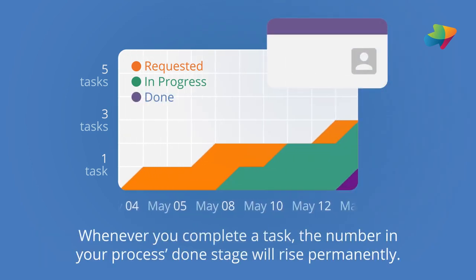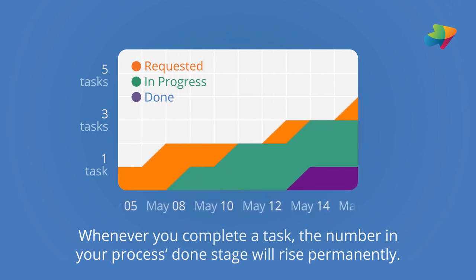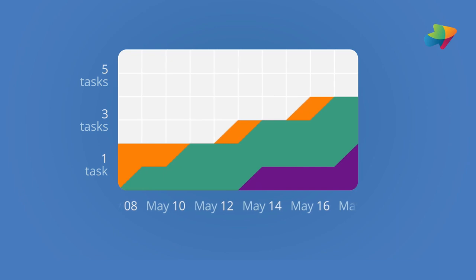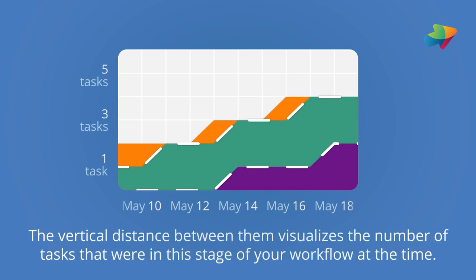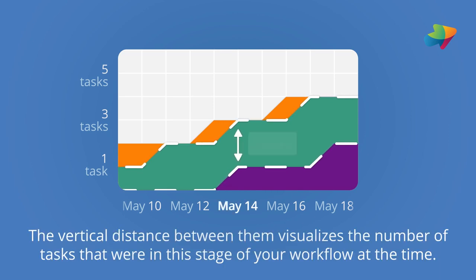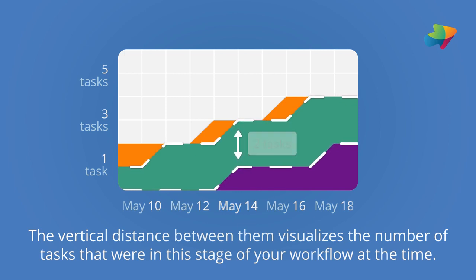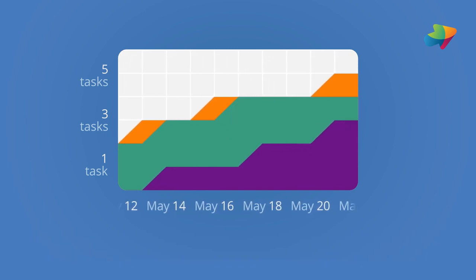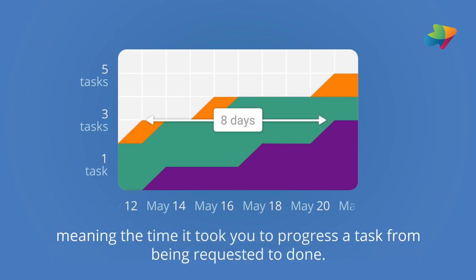Whenever you complete a task, the number in your process's done stage will rise permanently. Each stage has an arrival and a departure line. The vertical distance between them visualizes the number of tasks that were in this stage of your workflow at the time. The horizontal distance between your first and last stage shows the approximate average cycle time for your tasks — meaning the time it took to progress a task from being requested to done.